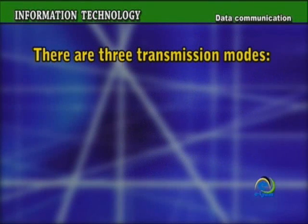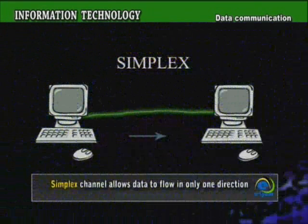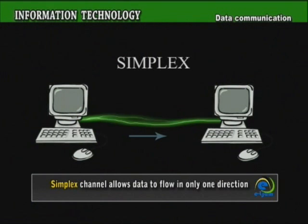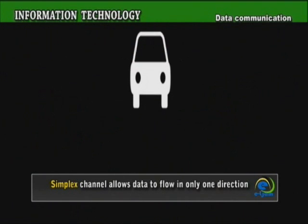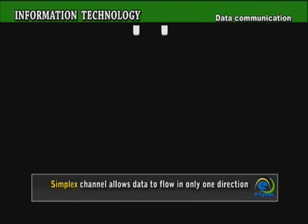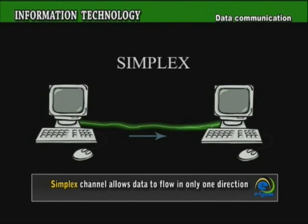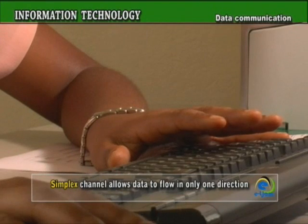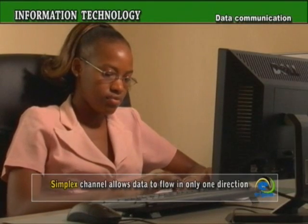There are three transmission modes: Simplex, Full Duplex, and Half Duplex. A Simplex channel allows data to flow in only one direction, much like a one-way street, therefore sending information slowly. An example of this type of communication occurs between the keyboard and the computer system, or between the radio station and your radio at home.